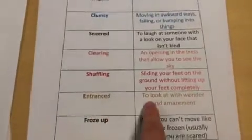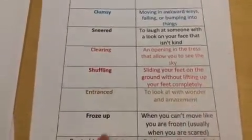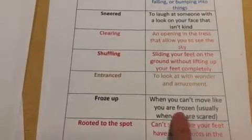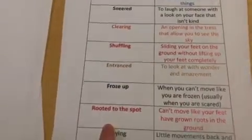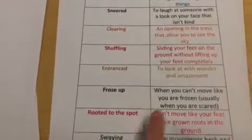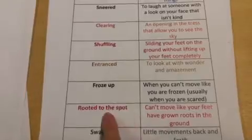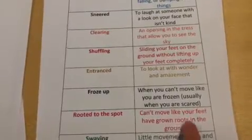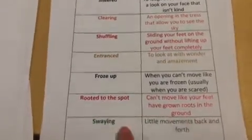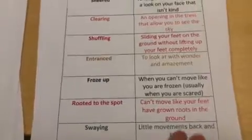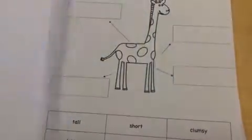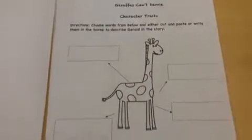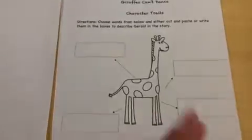'Entranced' means to look at with wonder and amazement. 'Froze up' is when you can't move, like you're frozen. 'Rooted to the spot' — Gerald was rooted to the spot — means can't move, like your feet have grown roots in the ground. 'Swaying' means little movements back and forth. And you've got the character traits here that can help you to do this.